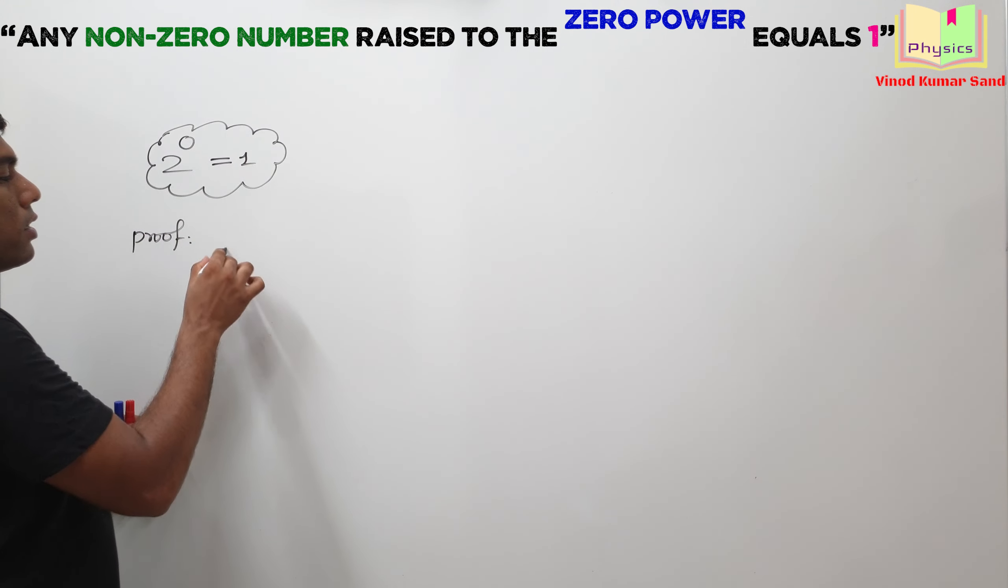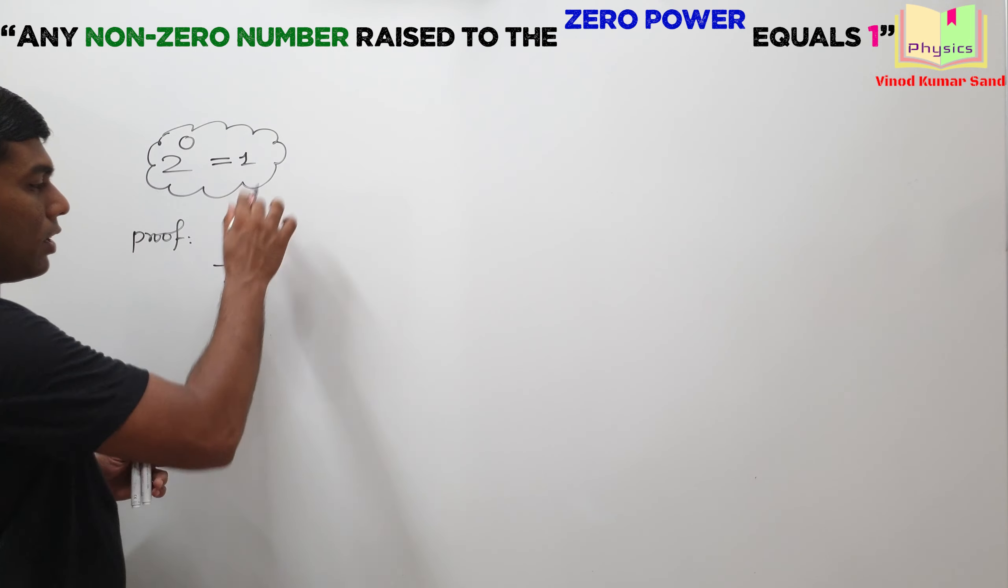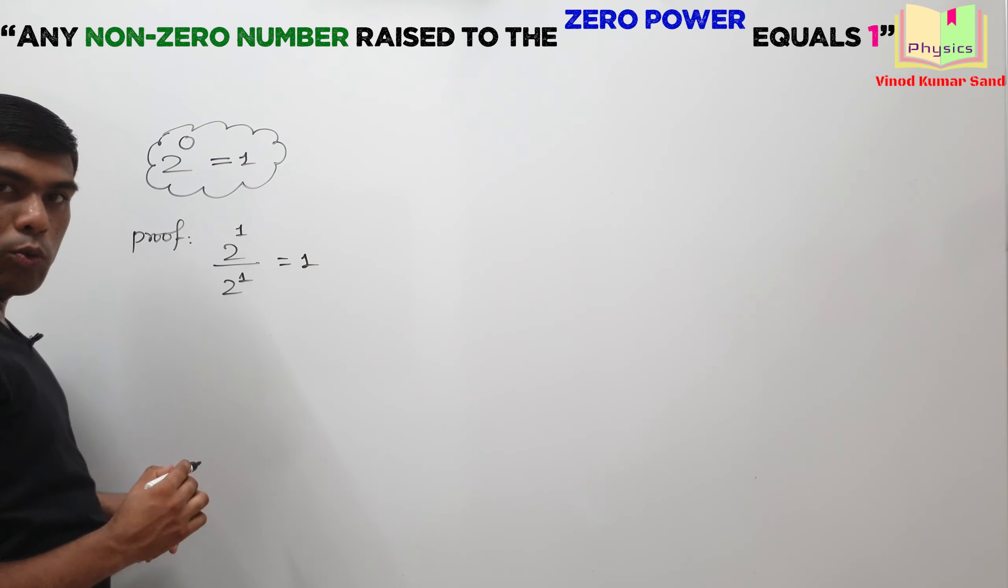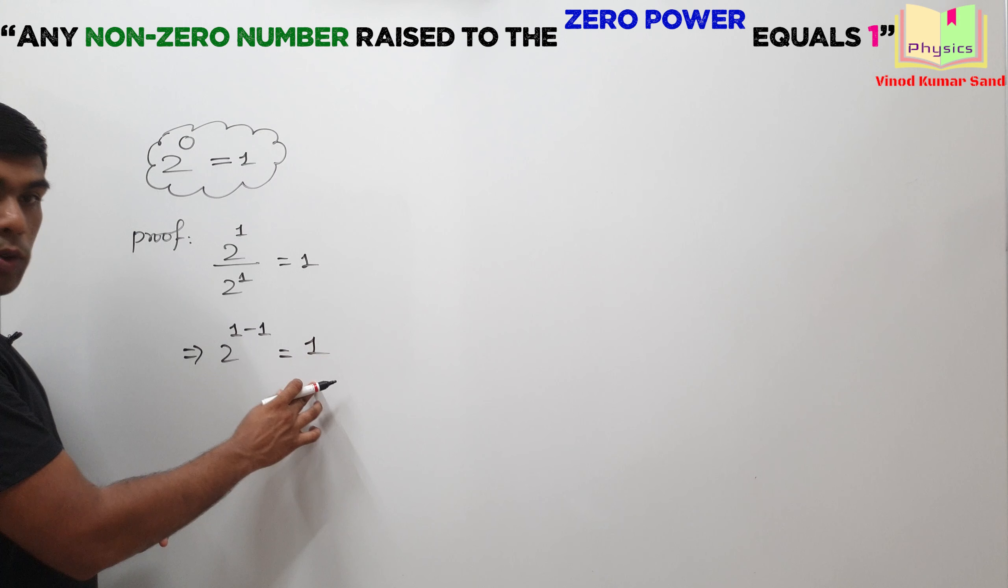Suppose we write 2 to power 1 by 2 to power 1, then what will be the answer in the RHS? Everyone knows it will be equal to 1. This data in the denominator can be taken to the numerator, then what I should write? 2 to power 1 minus 1 and in RHS there is 1.